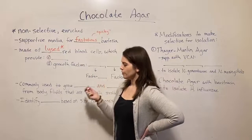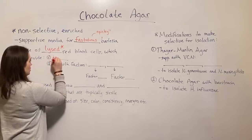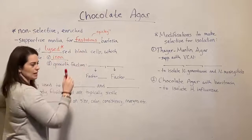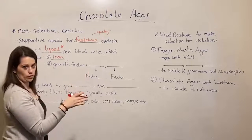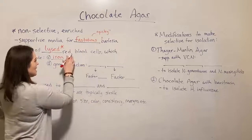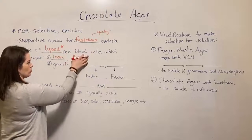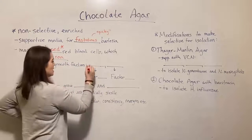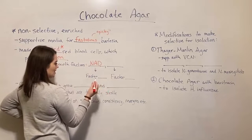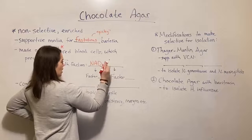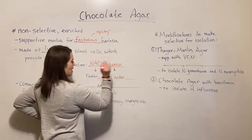Lysing the red blood cells provides two important things. First, it provides iron for these fastidious bacteria to grow. And it provides a few different growth factors that are present inside those red blood cells and become available in the media once those red blood cells have been lysed. Those growth factors are the coenzyme NAD, sometimes called NAD, and another growth factor called hemin, H-E-M-I-N.